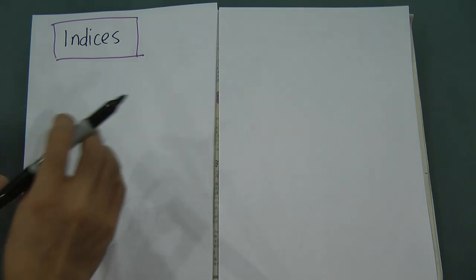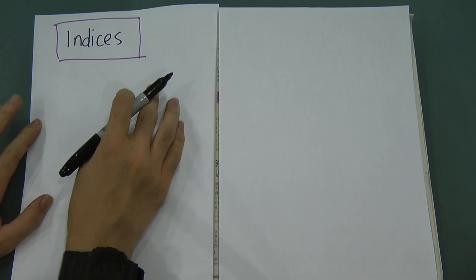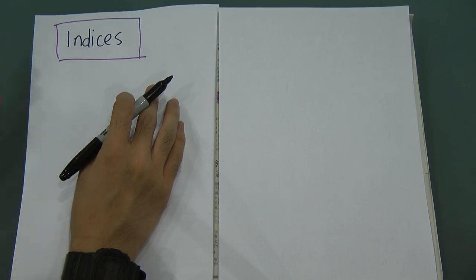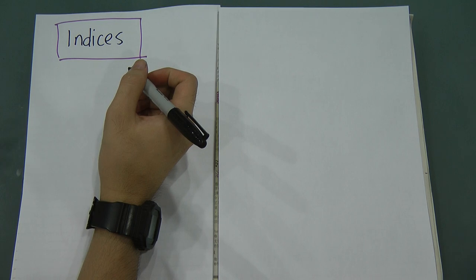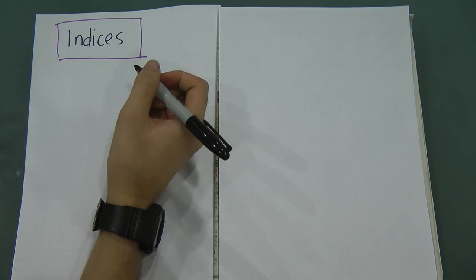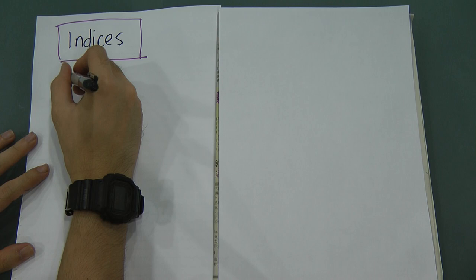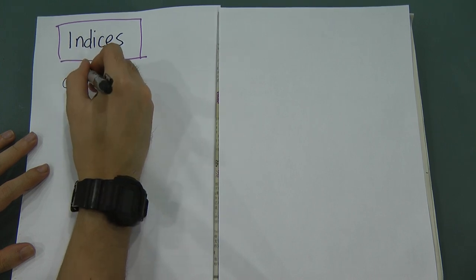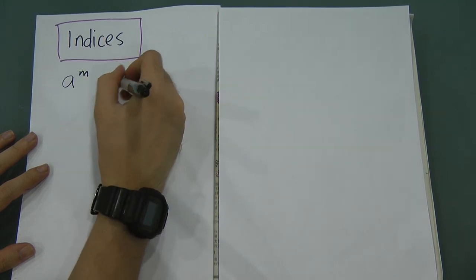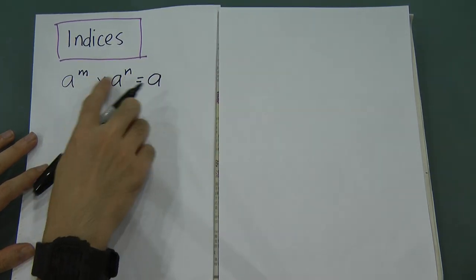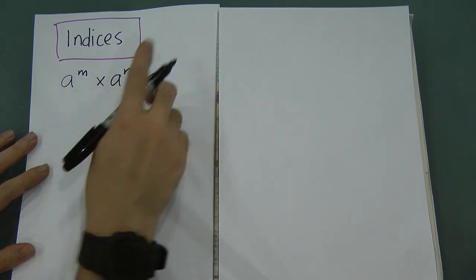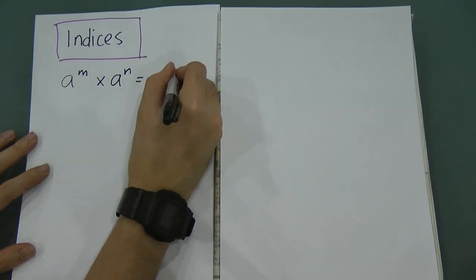Today I'm going to teach about some basic laws of indices. There are a few very important laws. The first law is: a to the power of m multiplied by a to the power of n equals a to the power of m plus n.